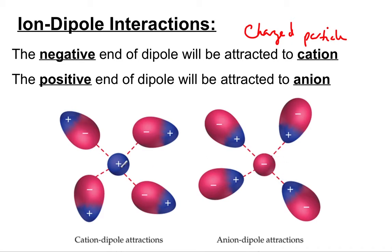This cation is attracted to the dipole. This positive is attracted to those negatives. So let's say this is salt, Na. And over here we have the Cl. This sodium ion is attracted to the negative sides, maybe, of water molecules.